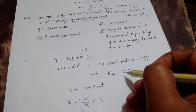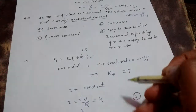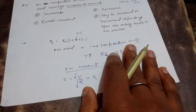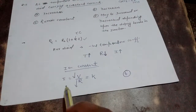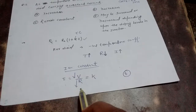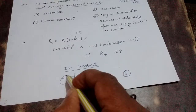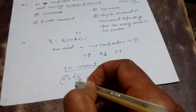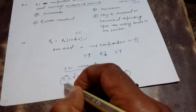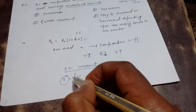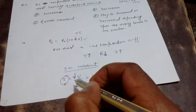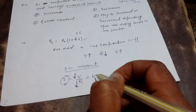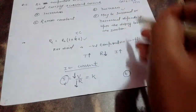If resistance decreases, what happens to current? Current would increase. But the question states that I is constant. By Ohm's law, I = V/R. If I is constant and R decreases, then voltage V must decrease. So the correct option is B — voltage decreases.